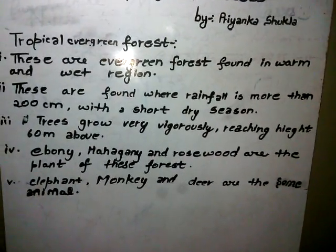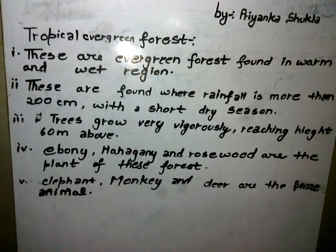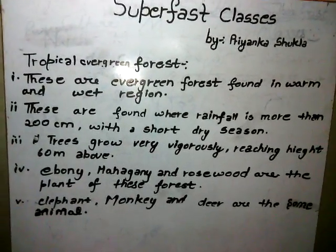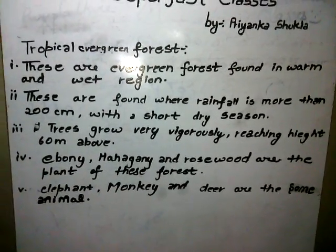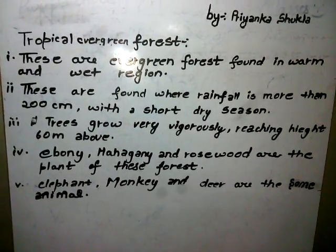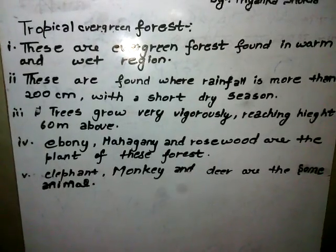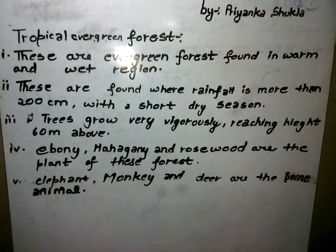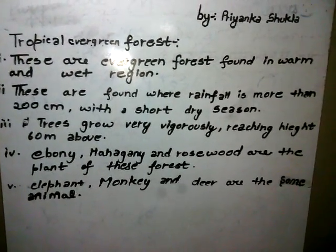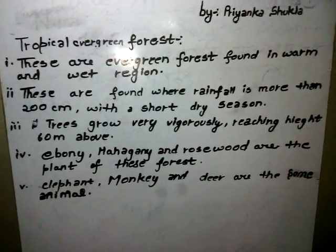The first characteristic of these forests is that they are evergreen forests found in warm and wet areas — these forests never look dry. These forests are found where rainfall is more than 200 centimeters, as you can see in point two, with a short dry season.